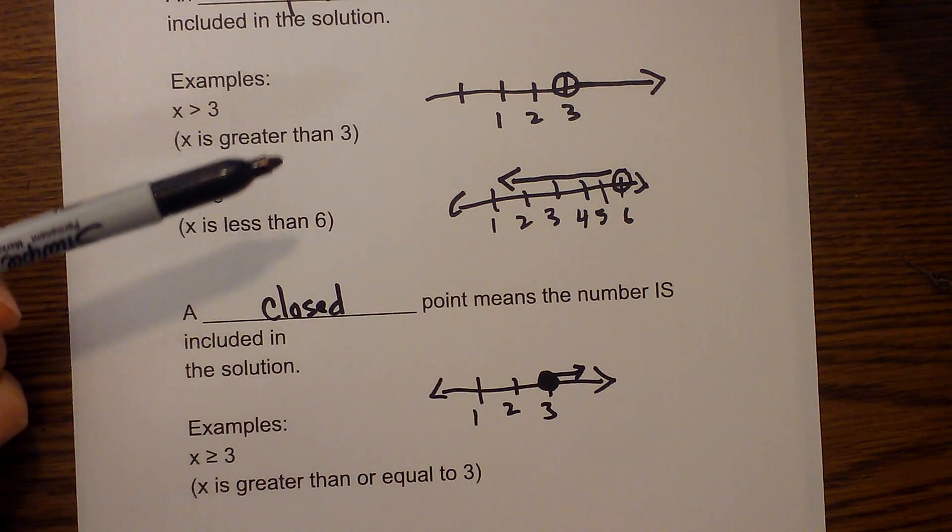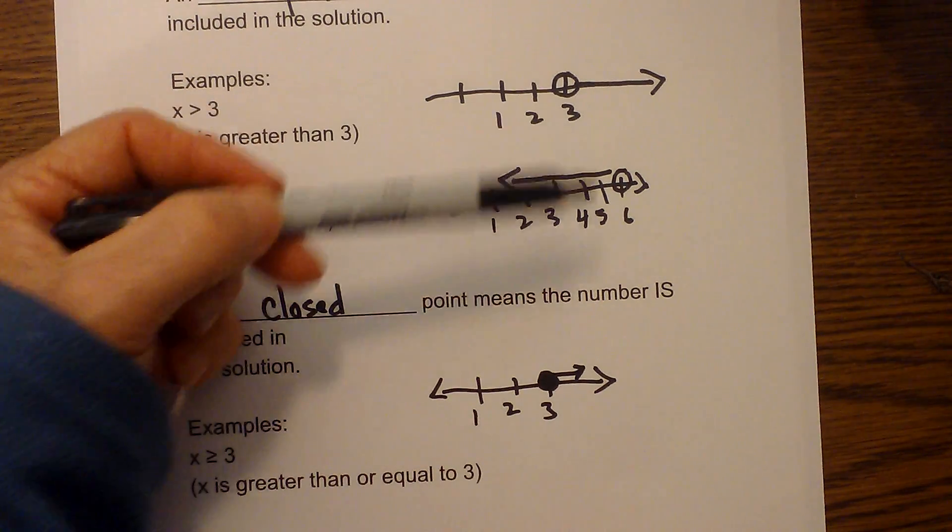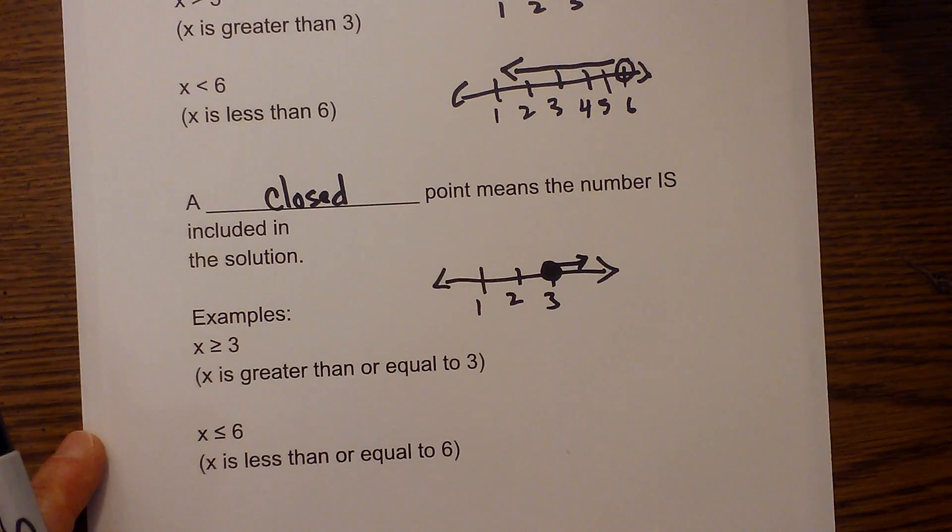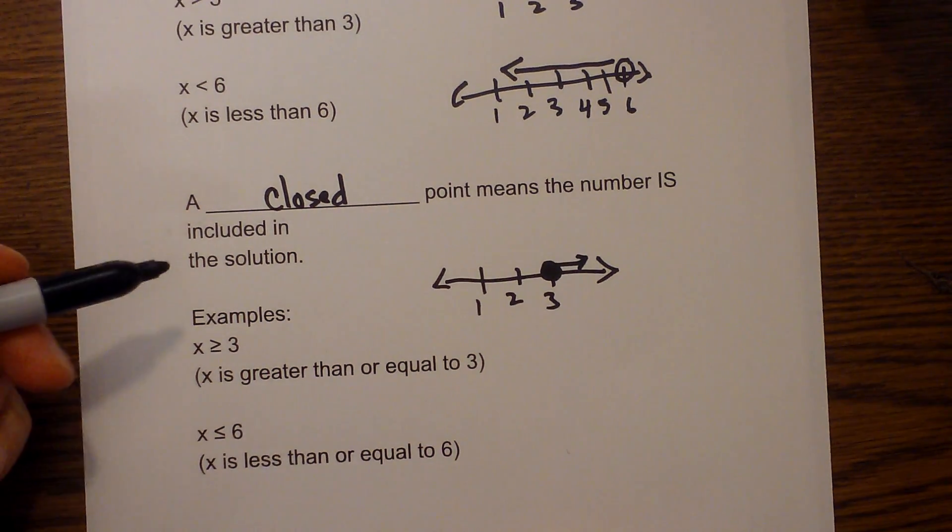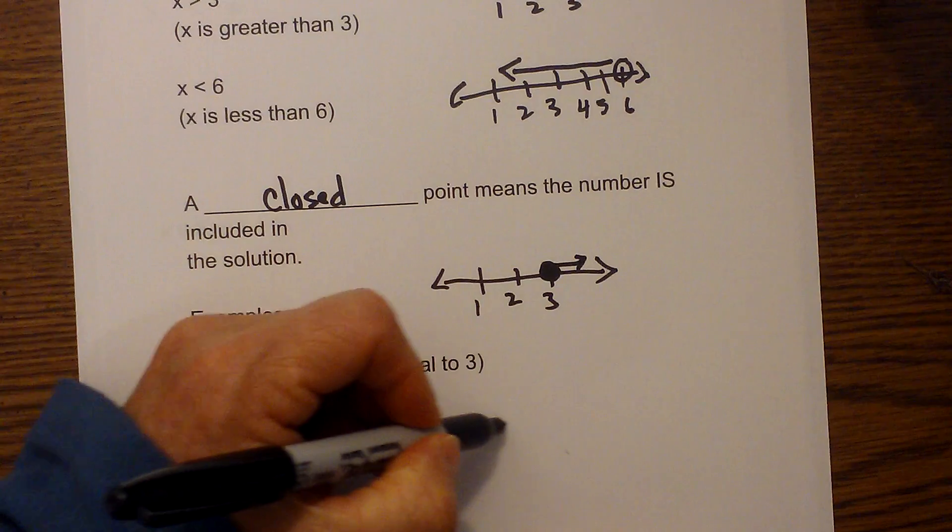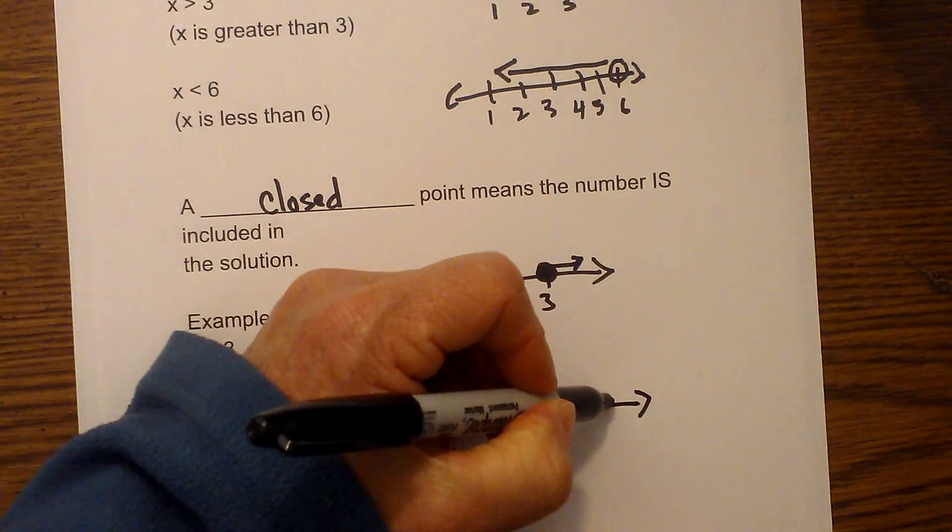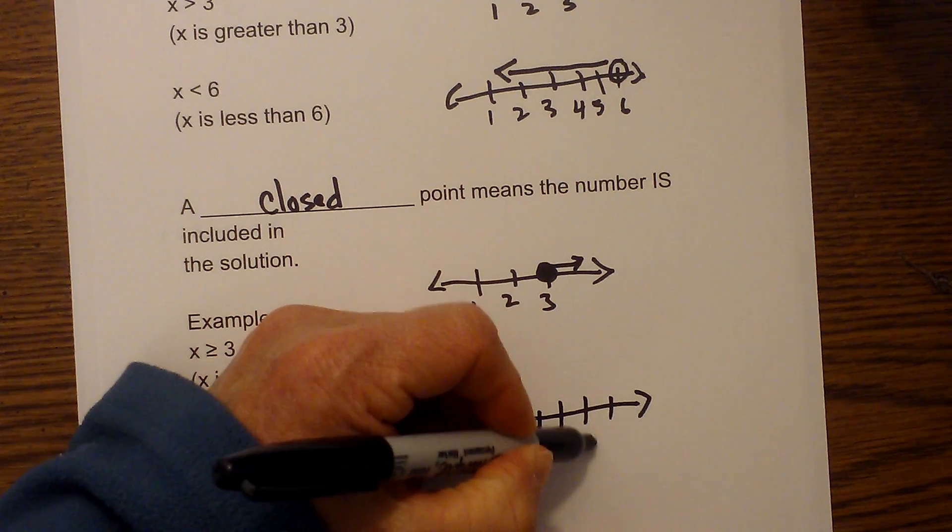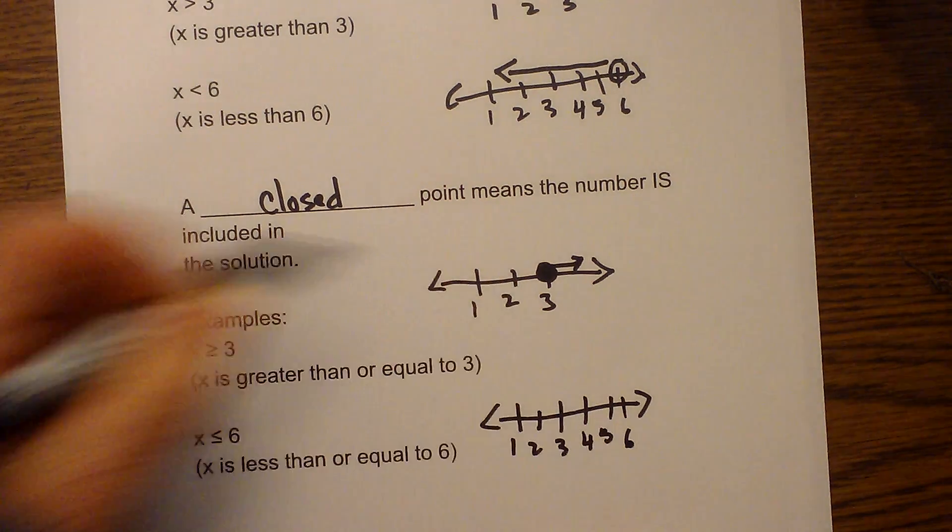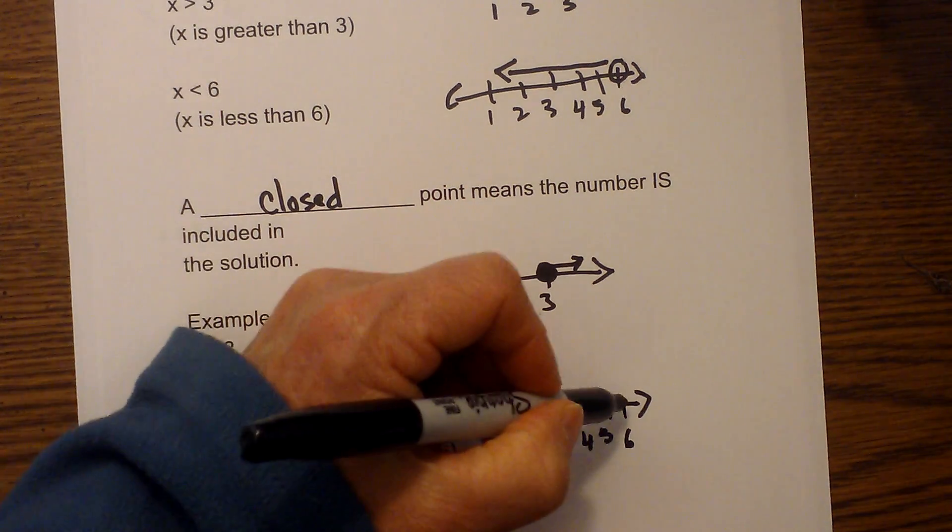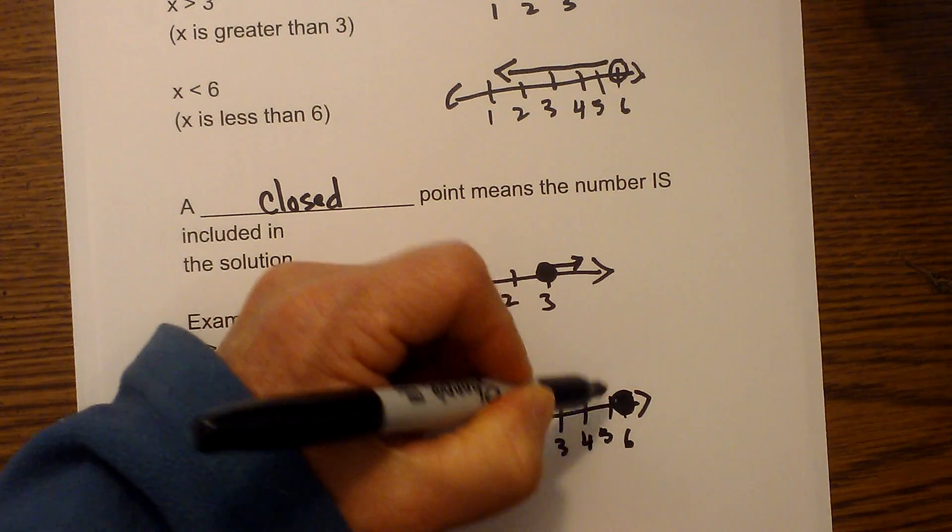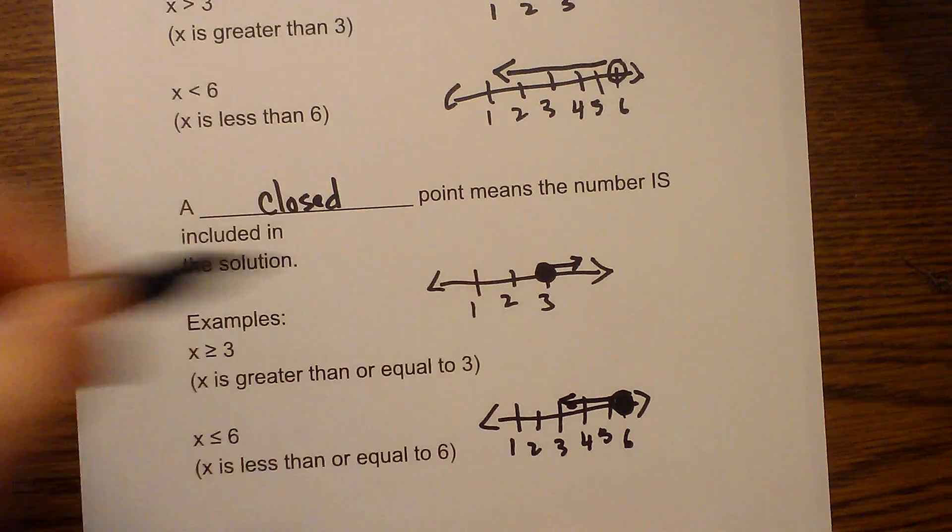When you are graphing inequalities, the tricky part is remembering it, is it open or closed. Then let's do one more, x is less than or equal to 6. Again we have a number line, hopefully you guessed it by now, 1, 2, 3, 4, 5, 6, and it is less than or equal to 6, so it is shaded in.